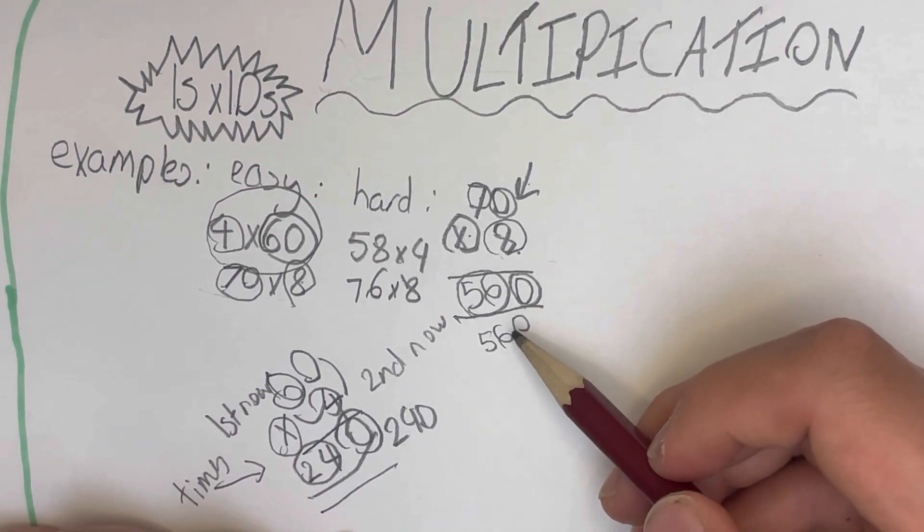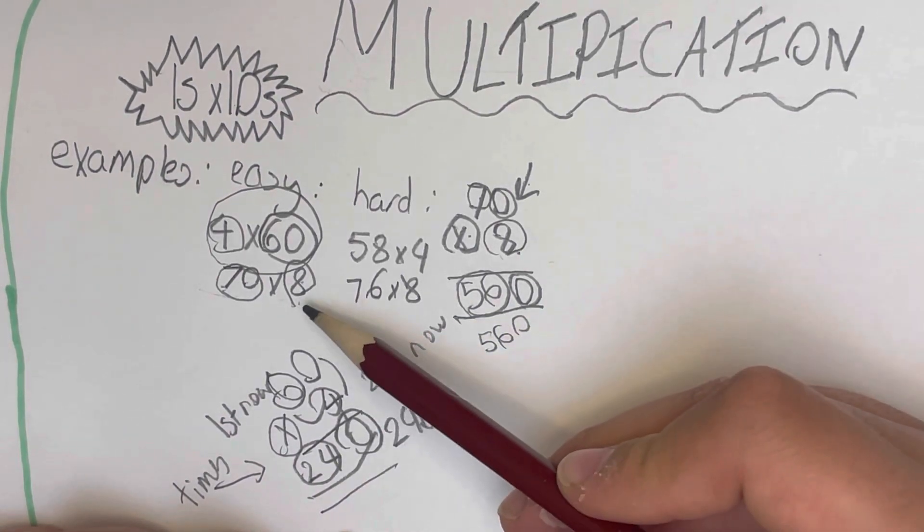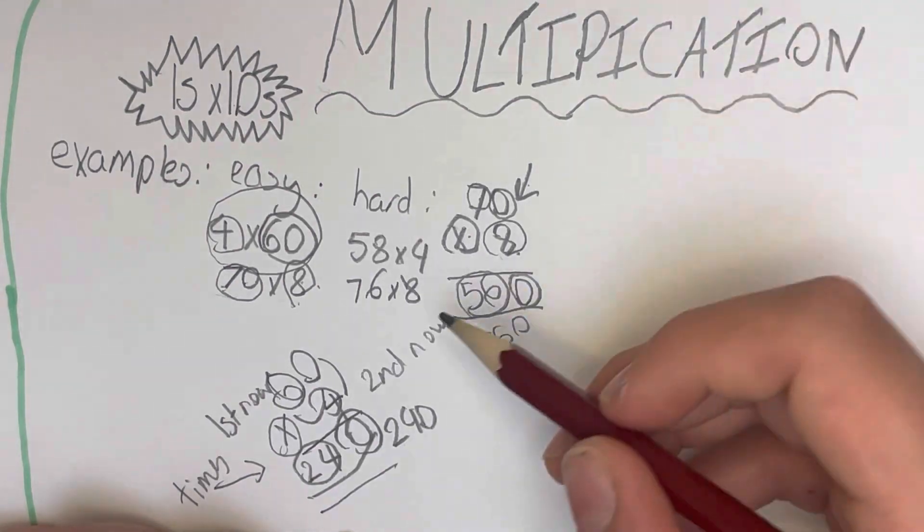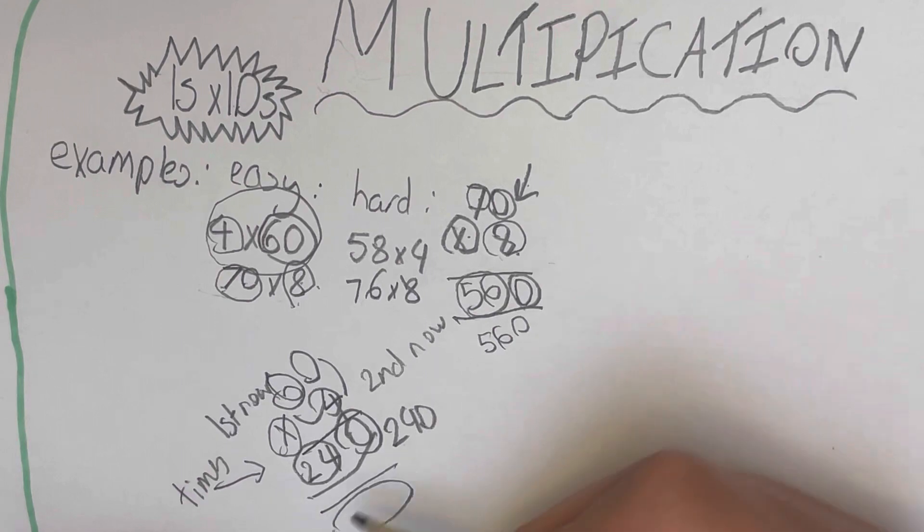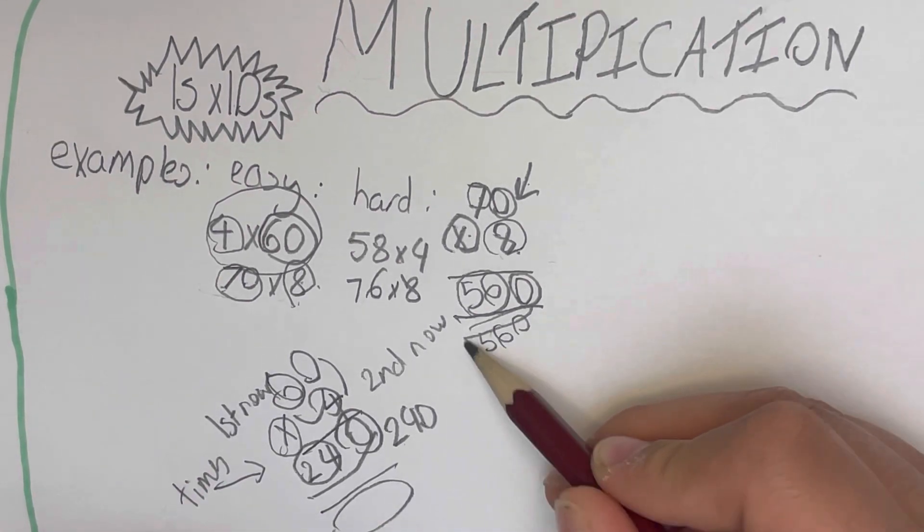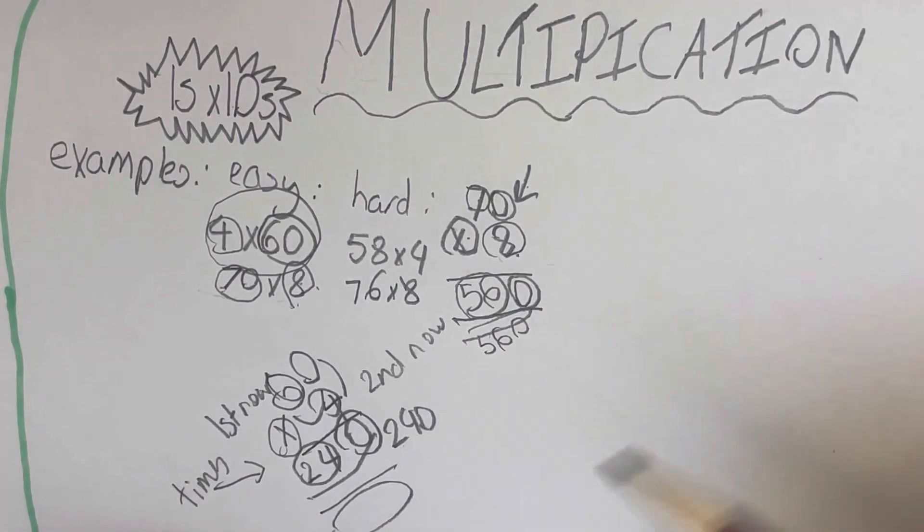Now moving on to the hard ones, where we get some numbers underneath over here. And over here we get some numbers which we have to add, and I'll show you how that works right now.